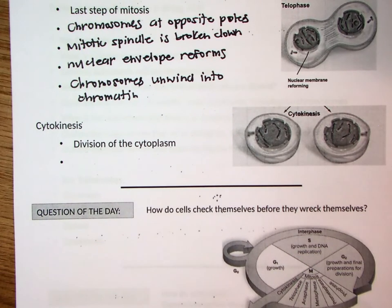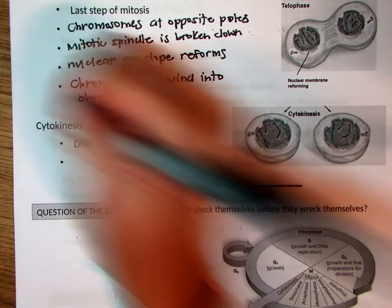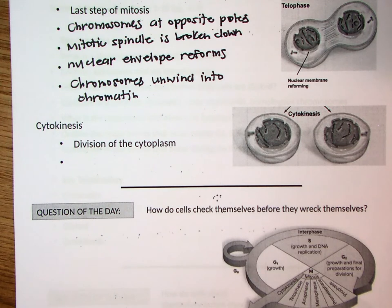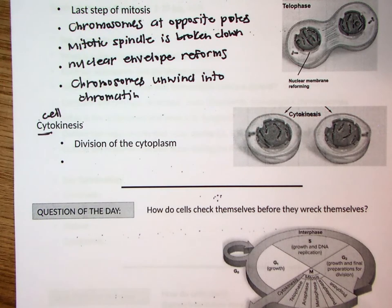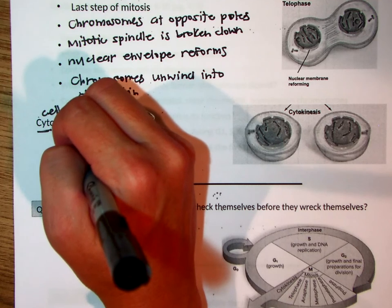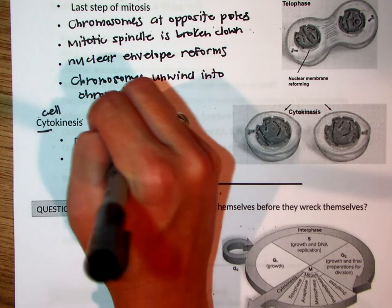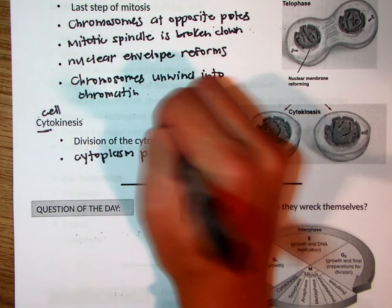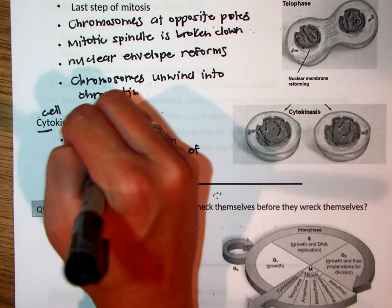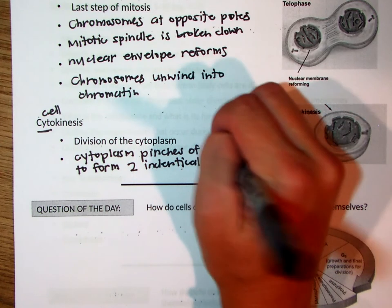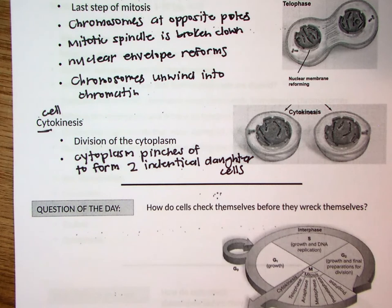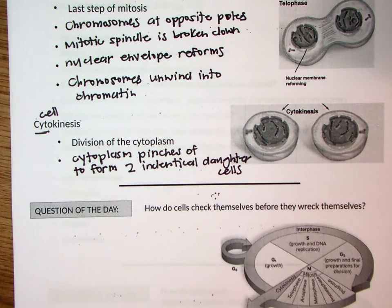The last part is called cytokinesis. Know that when we refer to mitosis and PMAT, cytokinesis was not part of that — PMAT refers to the division of the nuclear material. Cytokinesis — 'cyto' meaning cell — refers to the splitting of the rest of the cell. You've got to split up the cytoplasm and the other organelles. The cytoplasm pinches off to form two identical daughter cells, and now you have your two daughter cells identical to the parent.